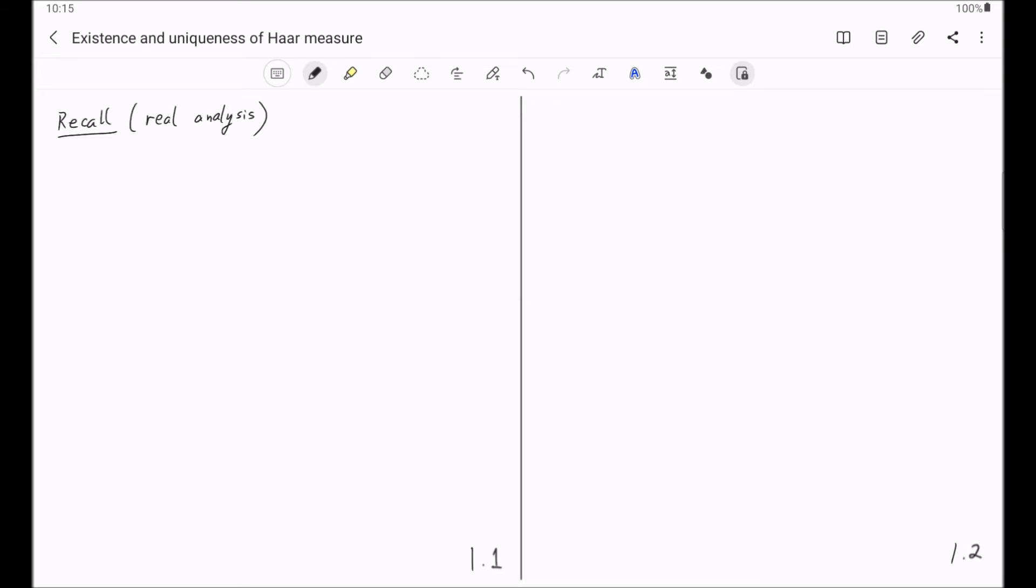Let X be a topological space, and mu be a Borel measure on X. For a Borel subset E of X, the measure mu is called outer regular on this Borel subset E if mu of E is the infimum of all the mu of U's, where U is an open subset covering E.